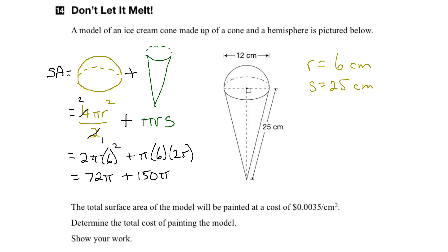So if we add those together we get 222π, and we know that π is approximately 3.14.